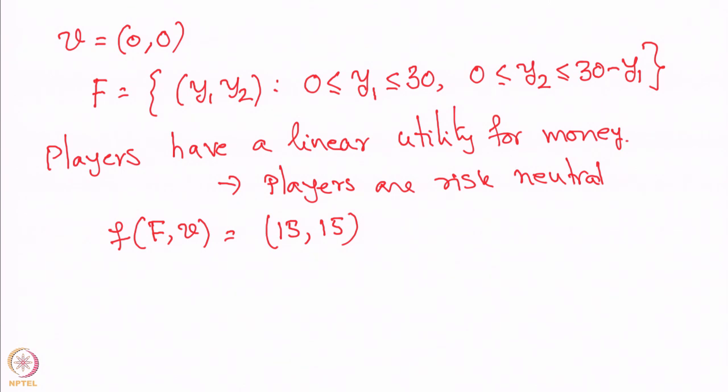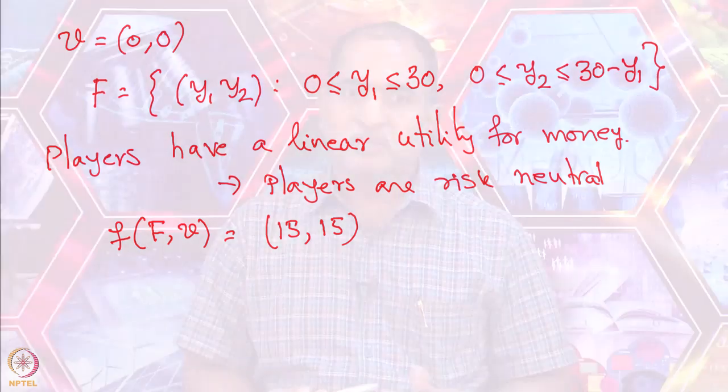It is not hard to see this from symmetry. Since y1 + y2 ≤ 30 and F is symmetric, in a symmetric solution y1 and y2 must be equal, and they can go up to 30. Therefore y1 = y2 = 15.